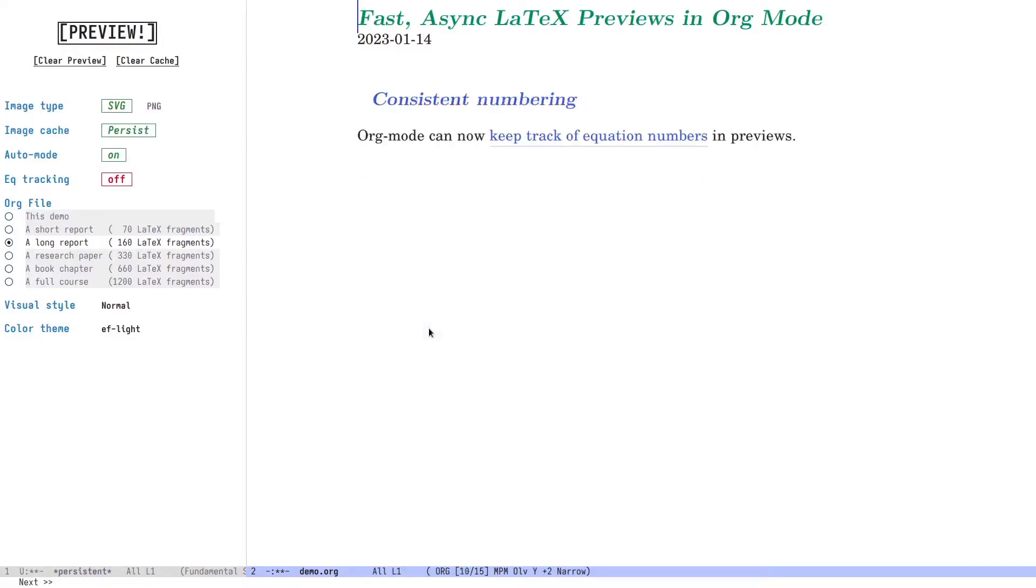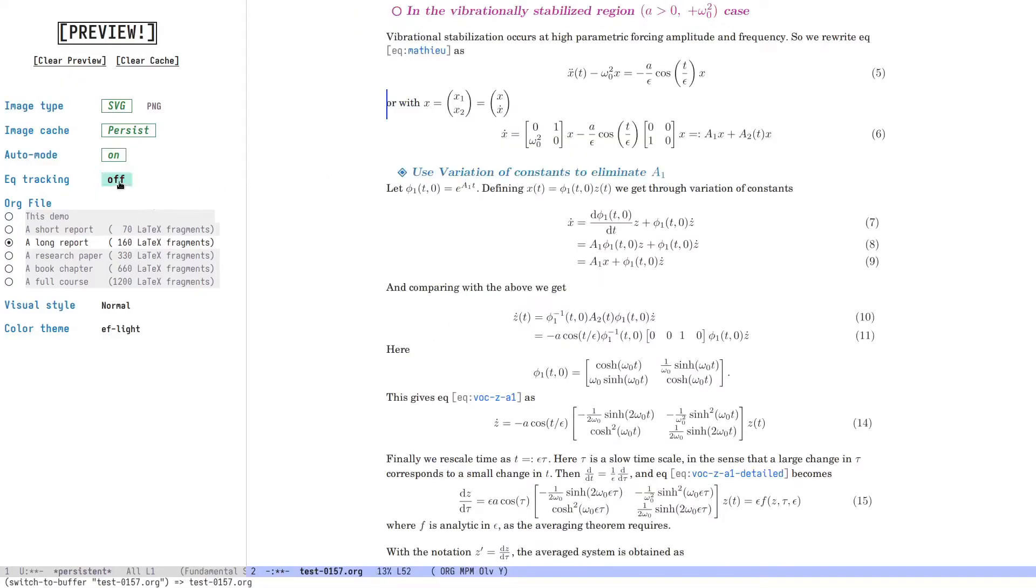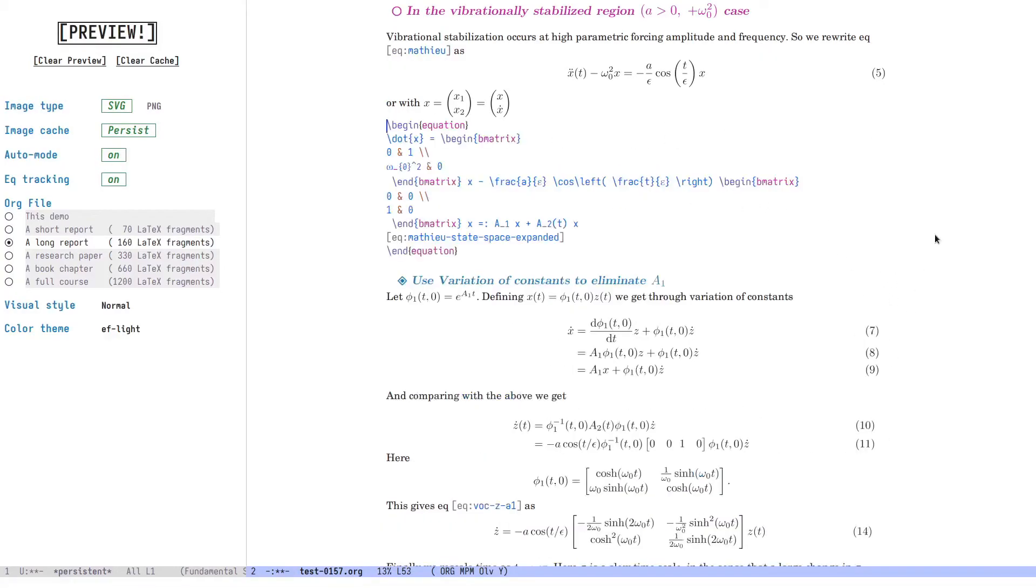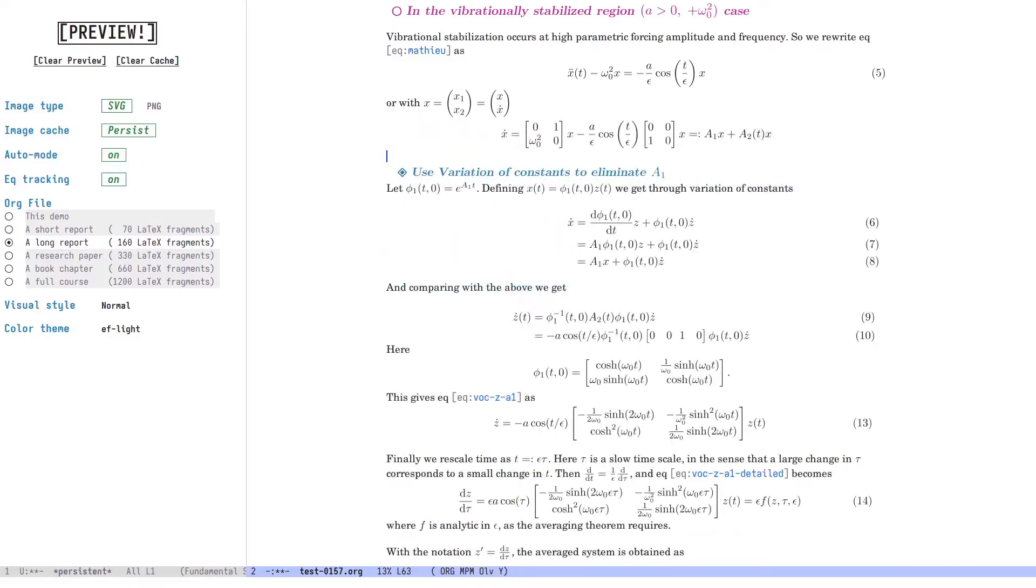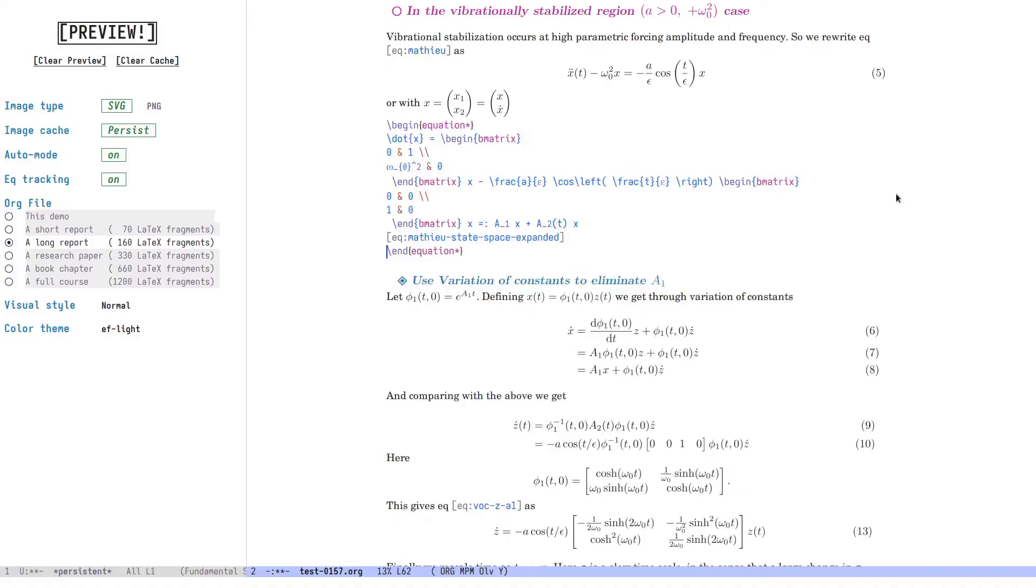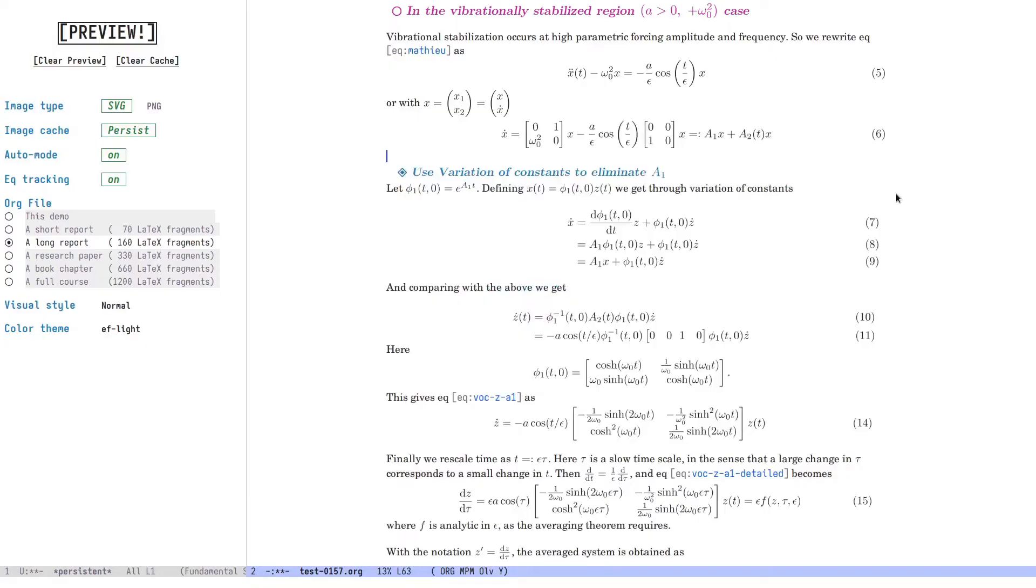Org mode can now track equation numbers. So let's turn on equation tracking in this buffer, and keep an eye on the equation numbers on the right. Now I'm going to pick one of these equations, let's say this one, and turn it into an unnumbered environment. And you'll notice that the equation numbers remain consistent. If I go back in here, and undo these changes, then we're back to the old equation numbering. So equations are renumbered as needed. And org will do its best to keep your equation numbering consistent across the document.